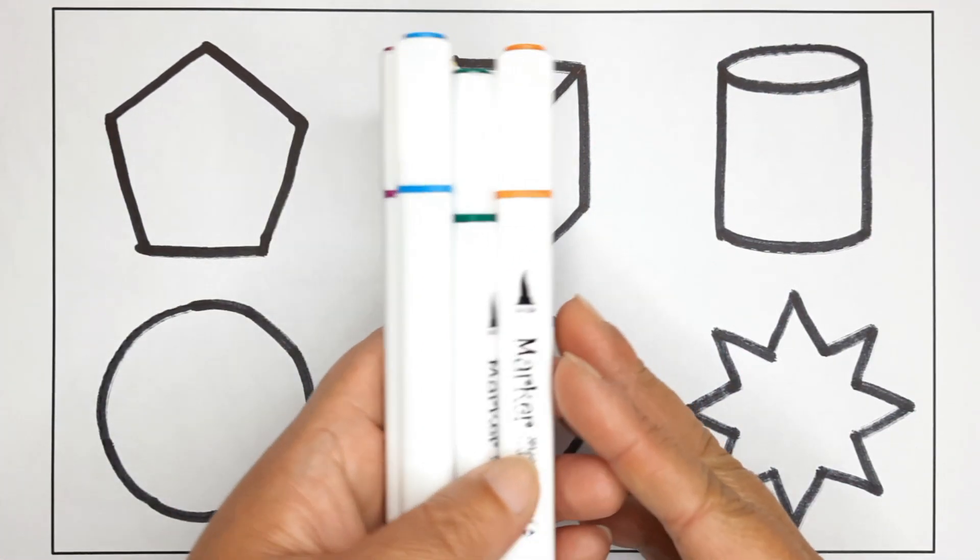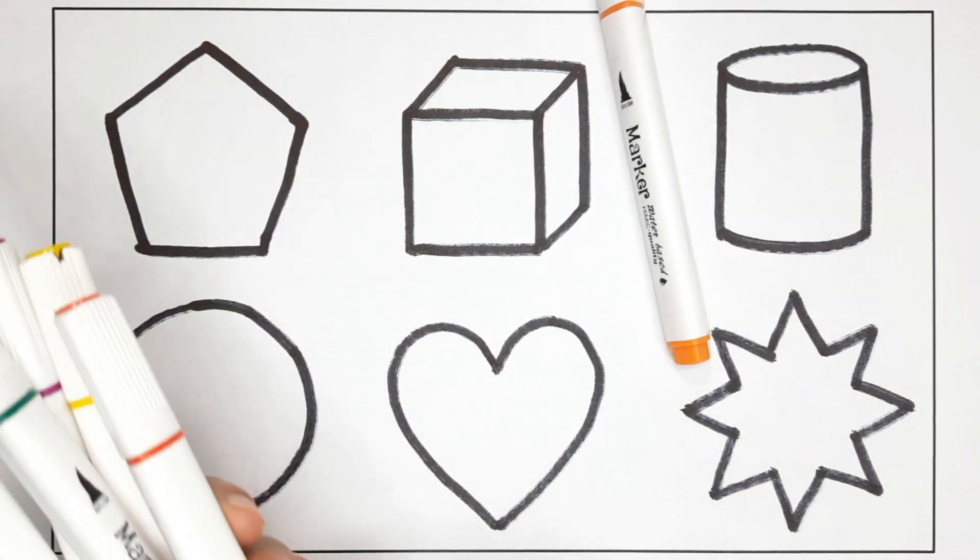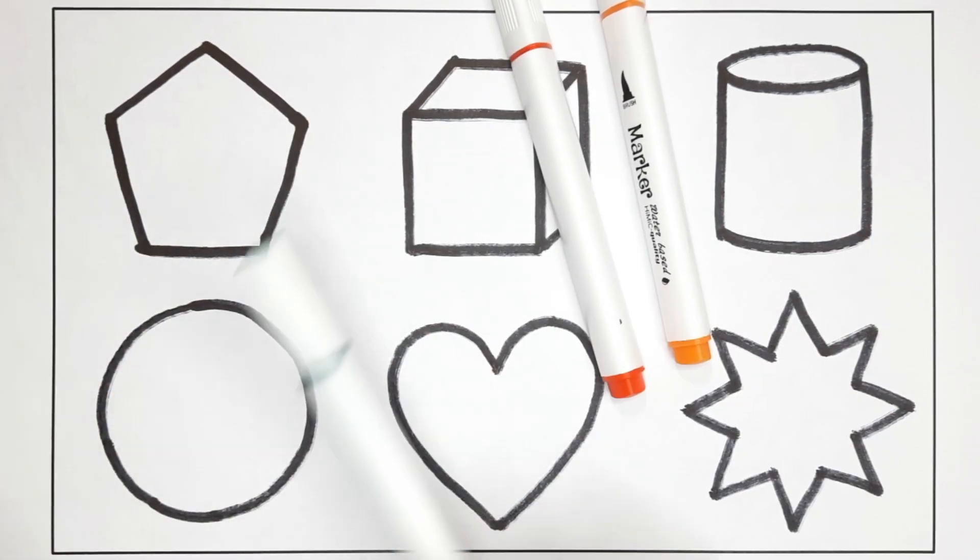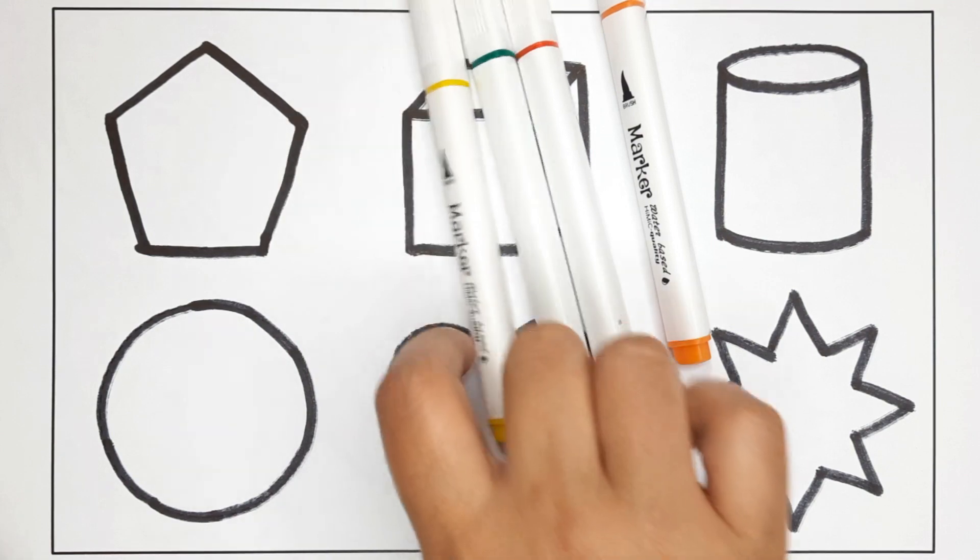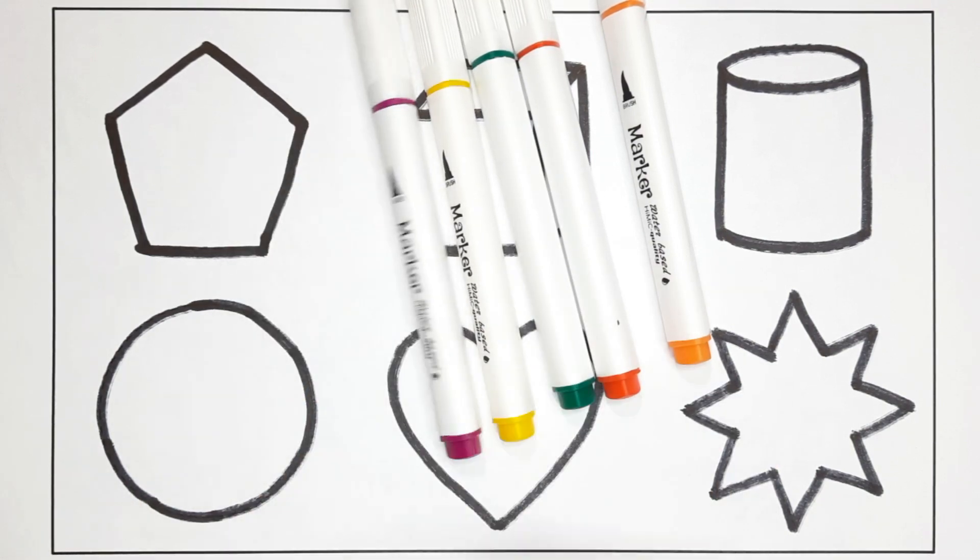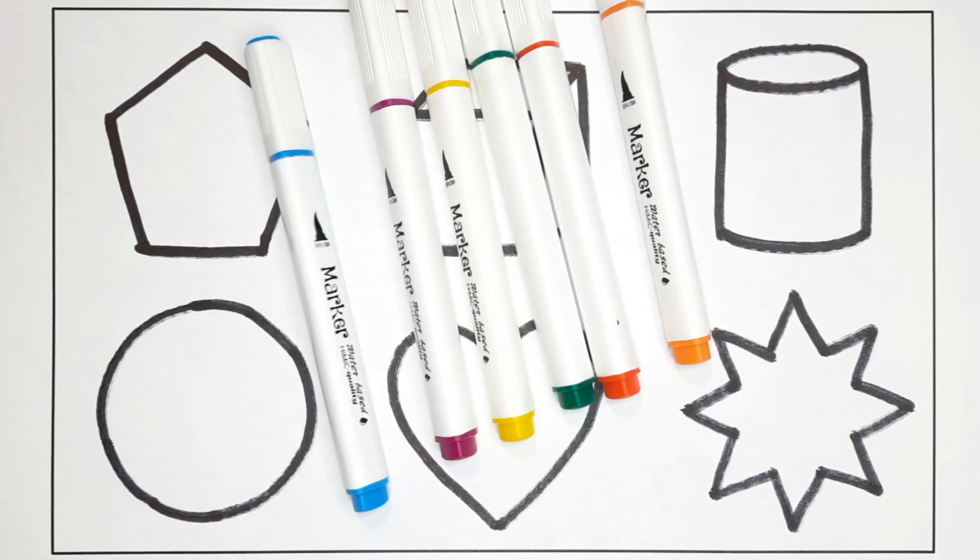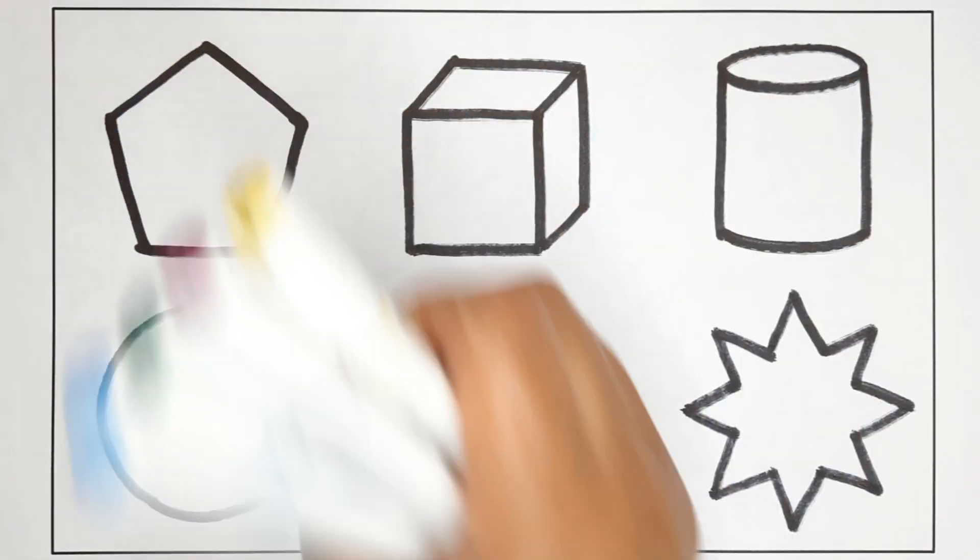Now let's learn the colors name: orange color, red color, green color, yellow color, pink color, sky blue color. Now let's color the shapes.